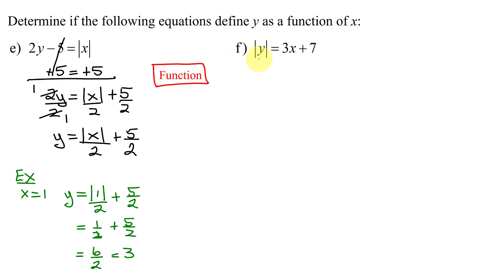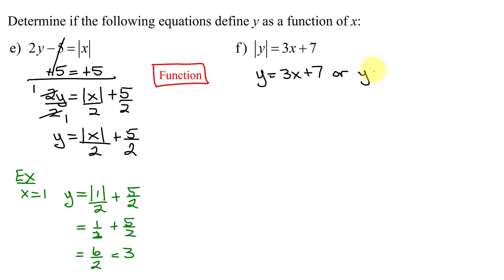In part F, I have |y| = 3x + 7. It's almost solved for y, but not quite. If the absolute value of a quantity equals a number, that quantity can equal this number or its opposite. So y can equal 3x + 7, or y can equal the opposite of (3x + 7).